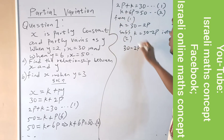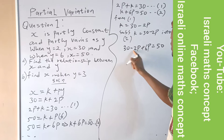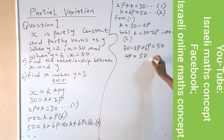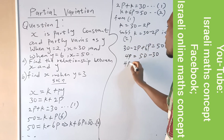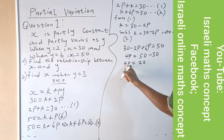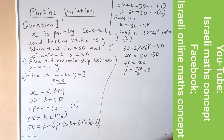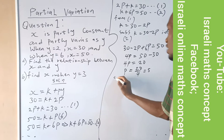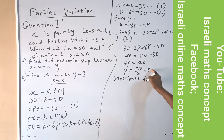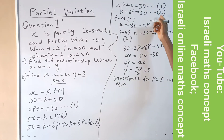So I now have 30 minus 2p plus 6p equals 50. Combining like terms: minus 2p plus 6p gives 4p. So 4p equals 50 minus 30, which is 20. Dividing both sides by 4, p equals 20 over 4, which equals 5. So now I substitute p equals 5 into either equation — they will give the same answer.